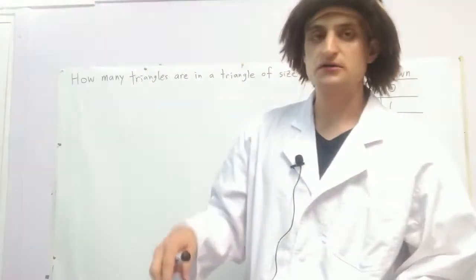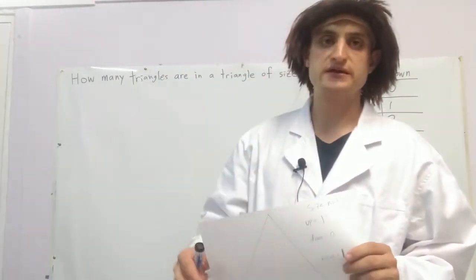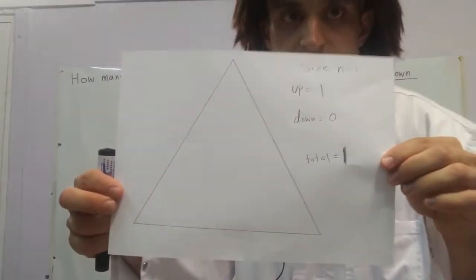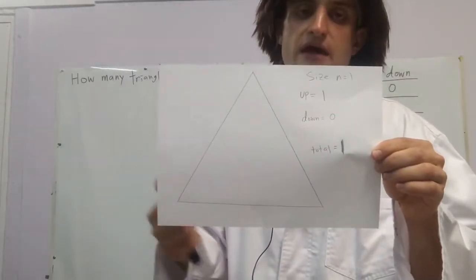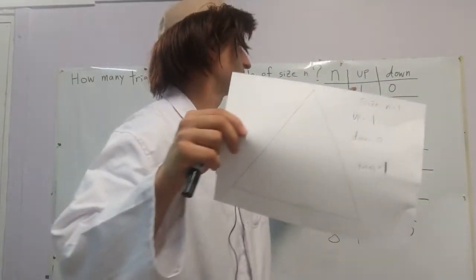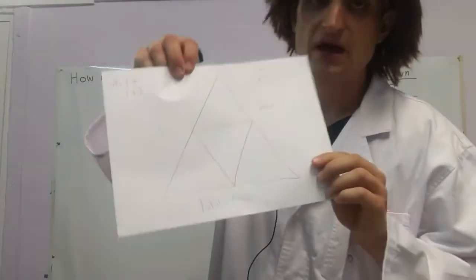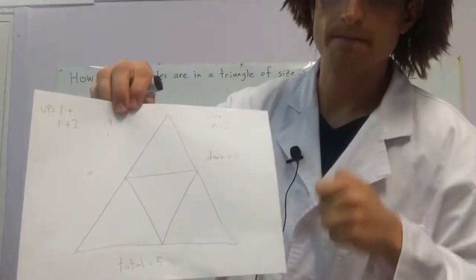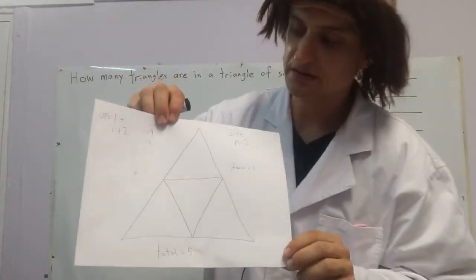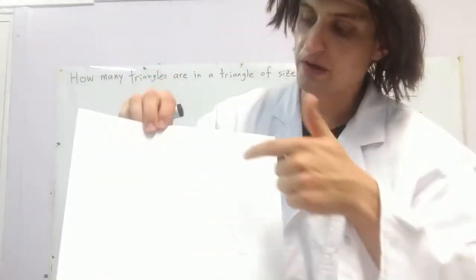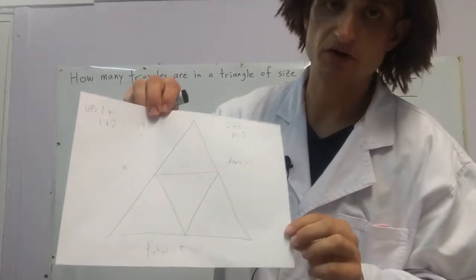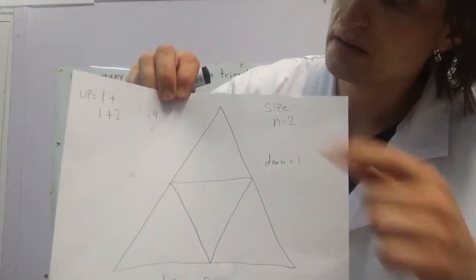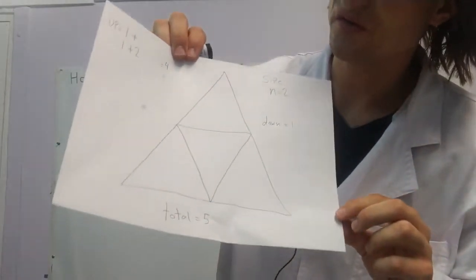First we'll start from small triangles and count only the triangles going up. For size 1, there's only one triangle going up. For size 2, we start by counting the biggest triangle — that's 1 — then count the smaller ones every row: 1 plus 1 plus 2, which gives us 4.